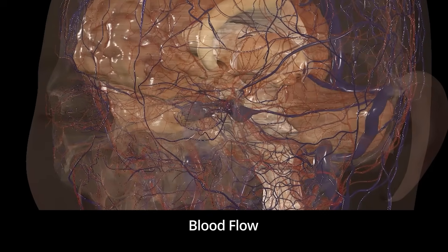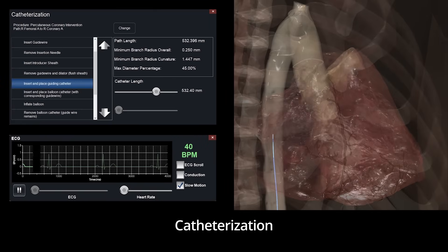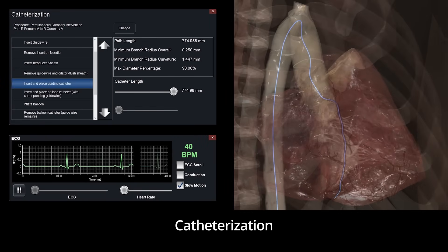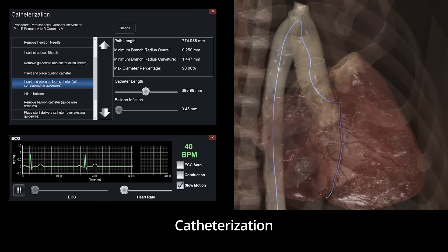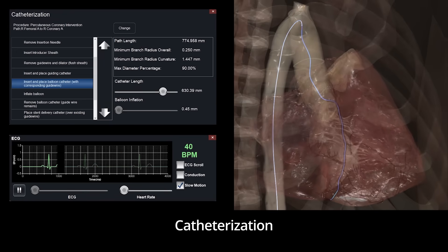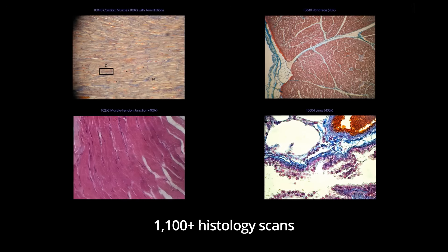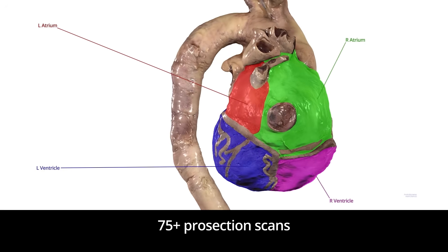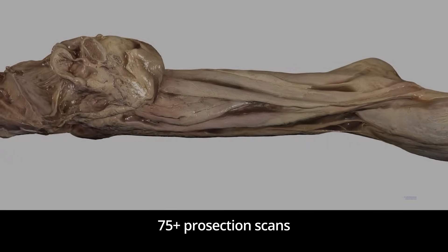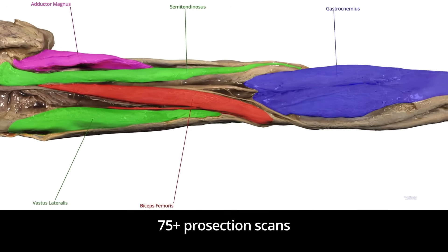Blood particles can also be simulated for visualization. Our clinical simulation suite includes a catheter, providing a practical experience of how catheterization is performed on a real human body. Our rich database of histology allows students to analyze tissue structures, and students have the opportunity to interact with 3D scans of authentic cadaver prosections, offering a true-to-life experience in cadaver study.